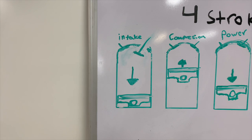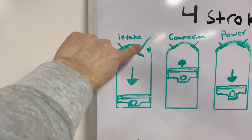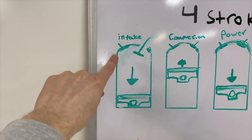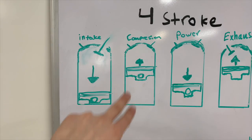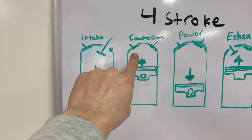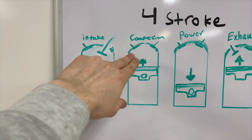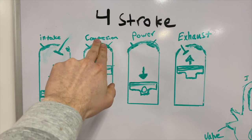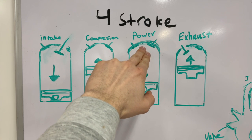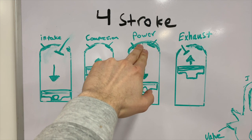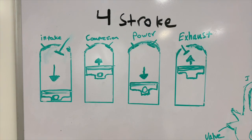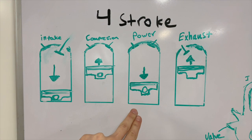On the intake stroke of a four stroke engine, the intake valve opens up and a fuel and air mixture comes down into the cylinder, creating a ready-to-burn mixture. On the compression stroke, both valves are closed and the piston travels upwards, compressing the fuel and air mixture taken in during the intake stroke. After compression, we have an ignition or combustion event where the gas expands and pushes the piston down, creating power. We have a power stroke every fourth stroke on a four stroke, and this is what drives and keeps the motor going.